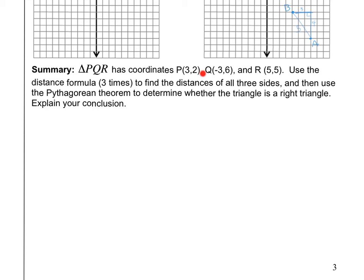So, you're going to actually find the distance from P to Q, the distance from Q to R, and the distance from R to P. I would recommend getting out some graph paper and plotting all this and drawing it out. Find the distance three times and then use the Pythagorean theorem to determine whether this triangle is actually a right triangle. So, once you have these three distances, plug it into the Pythagorean theorem and see if it's actually a right triangle and then explain your conclusion.